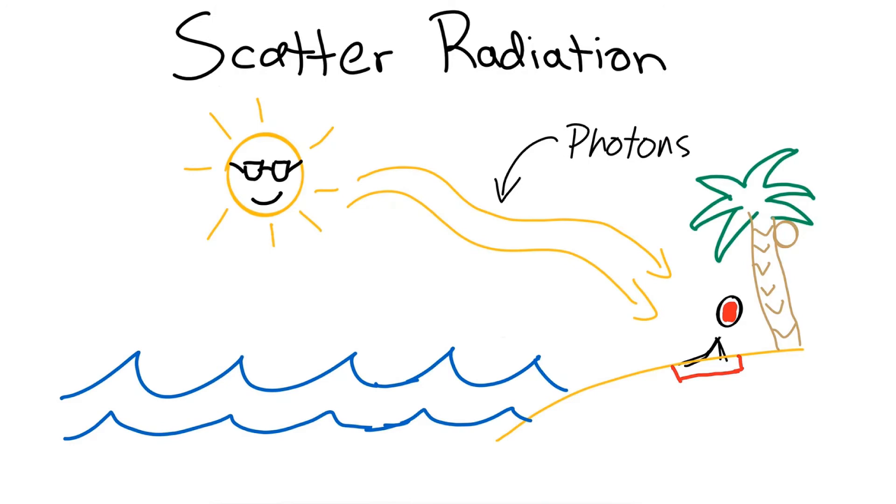And then you look out into the ocean and see that there is light reflecting off of the ocean and coming towards you. This is going to be what's called an incident photon, which is where light or energy in the form of light bounces off of the ocean and is deflected towards you. This is a form of scatter radiation.